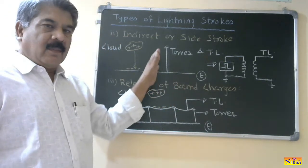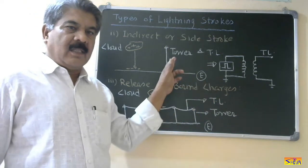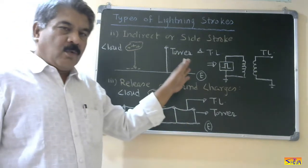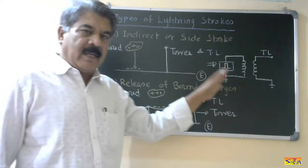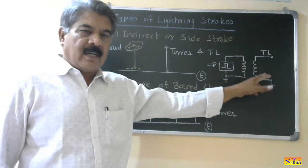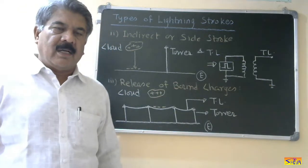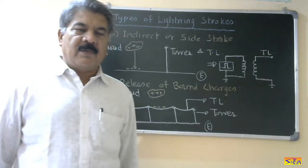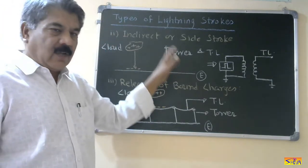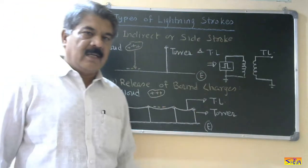When this type of discharge occurs near to the transmission line, a voltage wave of very high magnitude is induced in the transmission line because it acts as the secondary of a transformer. This voltage wave of very high magnitude — called a traveling wave — is established in the transmission line. I will explain in detail how these traveling waves damage the power system insulation afterwards. Since the discharge is not directly on the line or tower, it is called an indirect or side stroke.